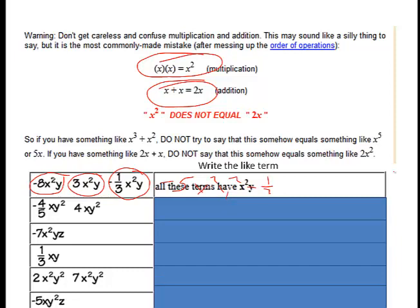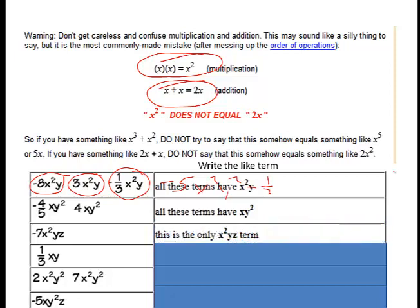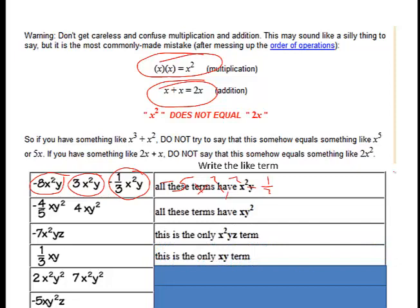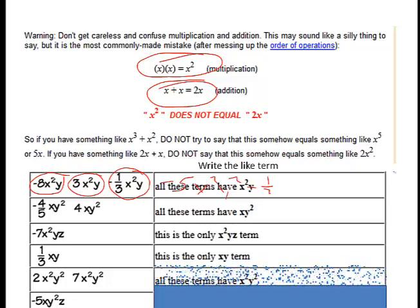The variable we're combining in the next one is XY squared. In the following one, there's nothing that can be combined — the only term is X²YZ. Same with the next — there's only one term: XY. Then we can combine the X²Y² terms: that gives 9XY². And the very last one, the only term there is XY squared Z.